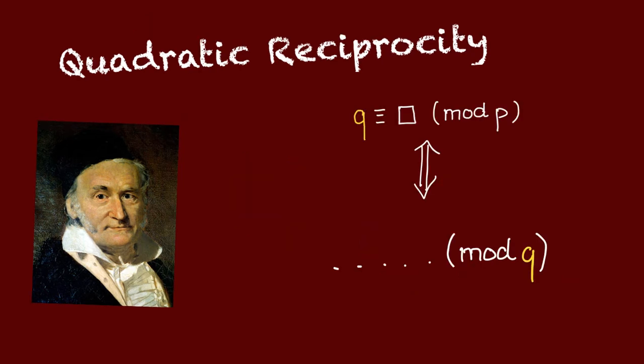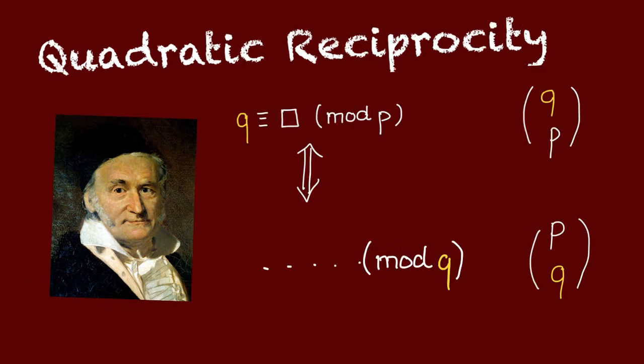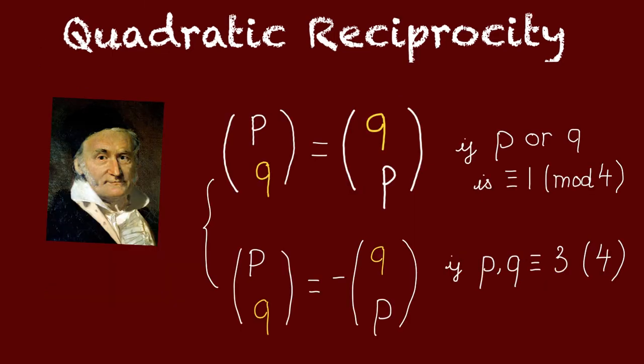Then in that case, the problem of rephrasing this condition in terms of a condition mod q could be changed into finding a relation between these two Legendre symbols. And that's what Gauss quadratic reciprocity gave us.